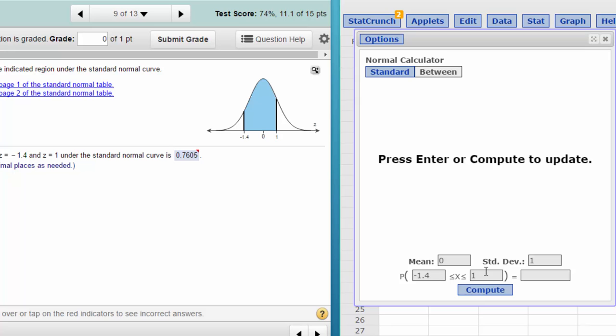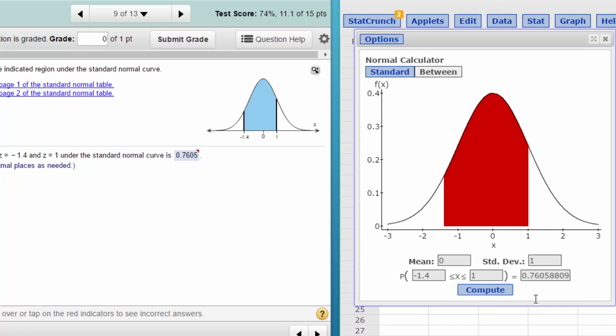We can leave our upper limit at 1. Click on Compute and we get an area under the curve of 0.761. If you rounded it off, they want four decimal places so it's 0.7606.